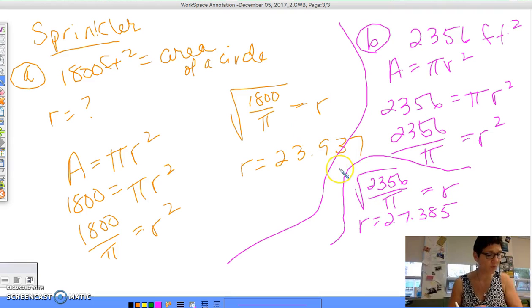So it's asking you how much longer would it have to be? So you would simply subtract these two. So 27.385 - 23.937 would be 3.748. So you would need 3.748 more feet in order to make that happen.